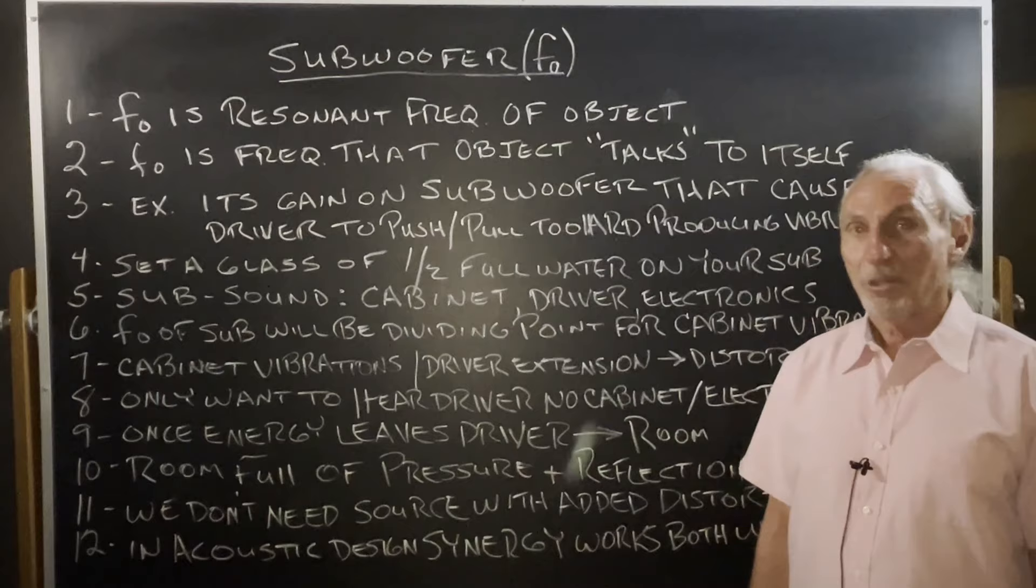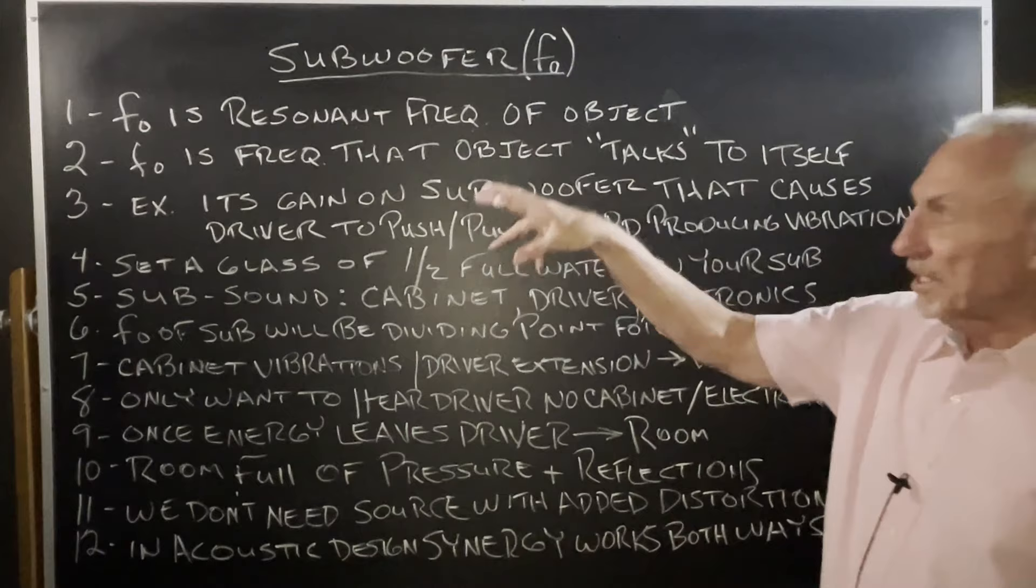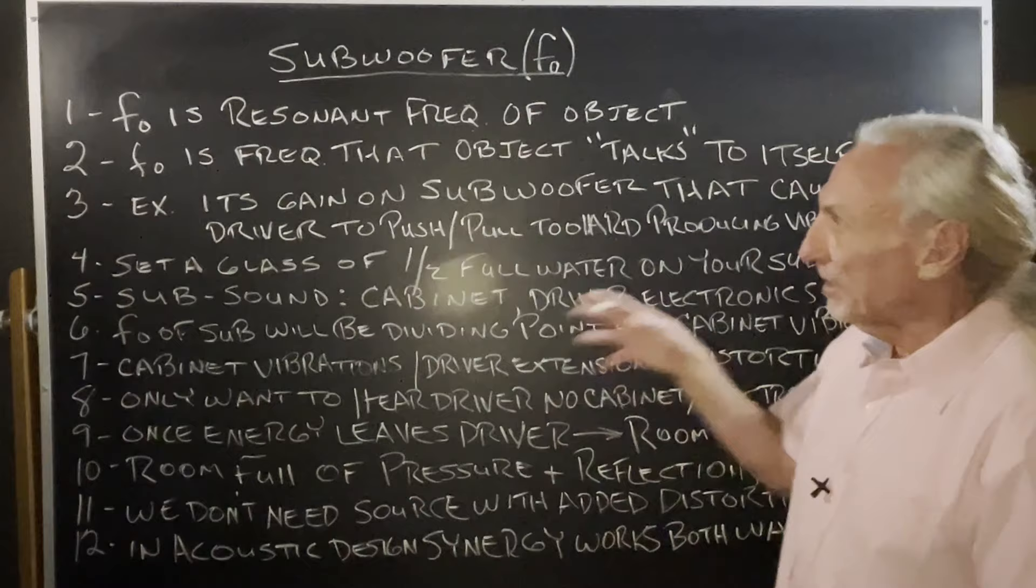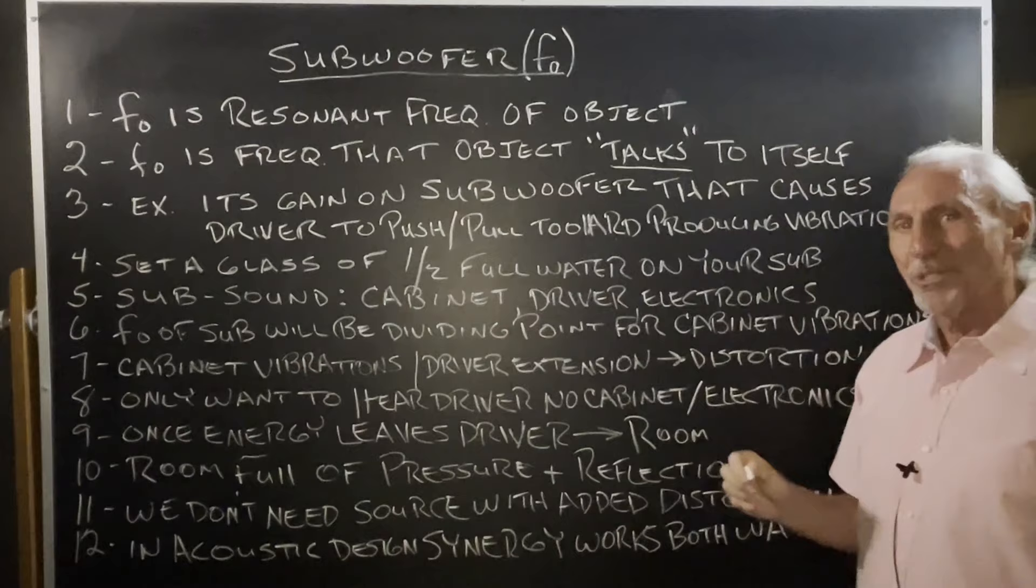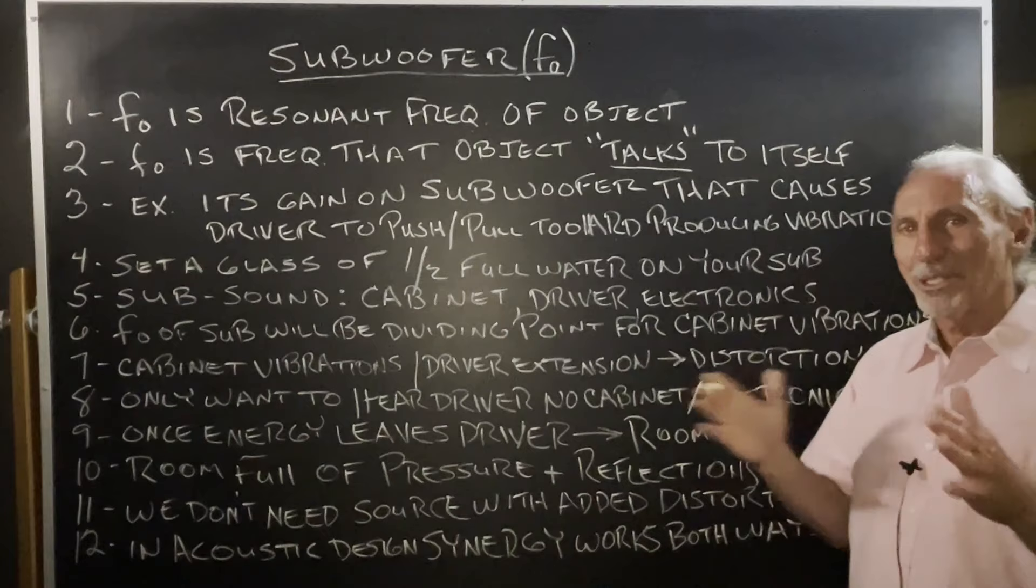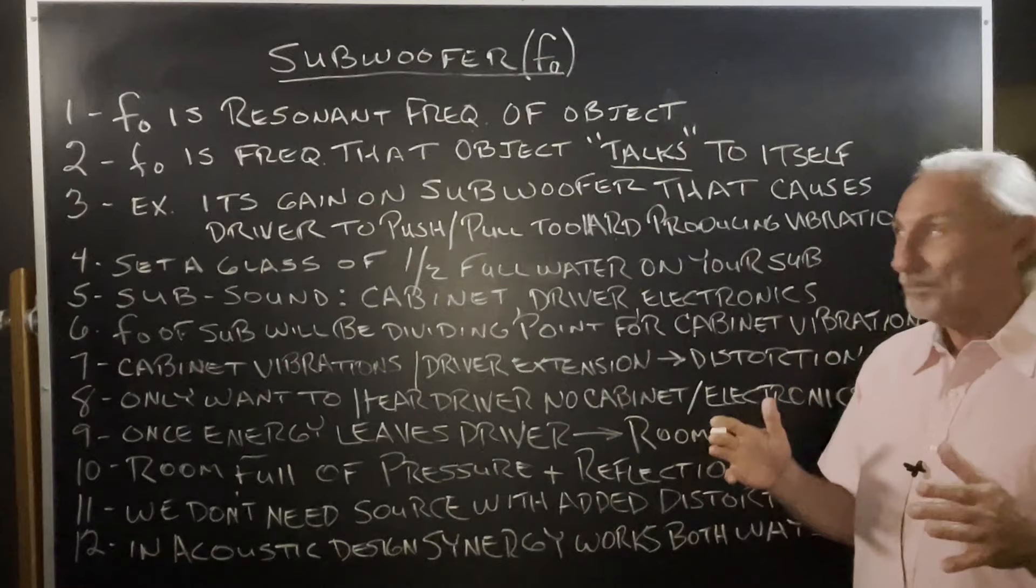The symbol for resonant frequency is F with a little circle underneath there. Resonant frequency of an object, and it's a frequency, it's defined. What's the easiest way to describe it? I think the easiest way to describe it is the frequency at which the object starts moving or talking to itself is a good way to think about it. It starts vibrating. That's its resonant frequency.